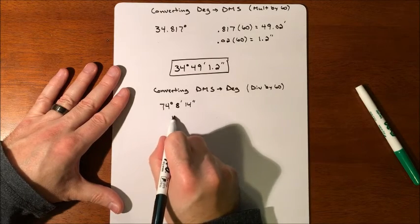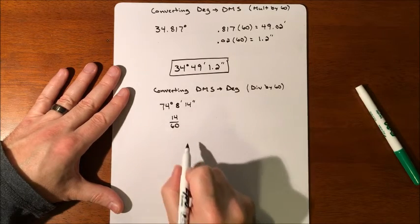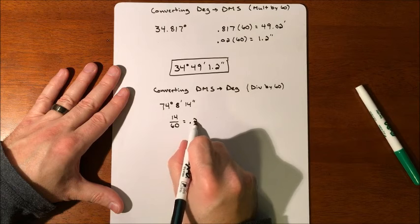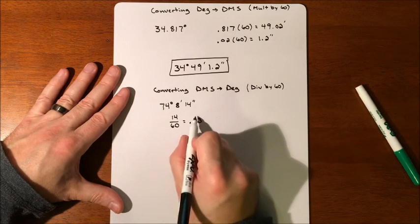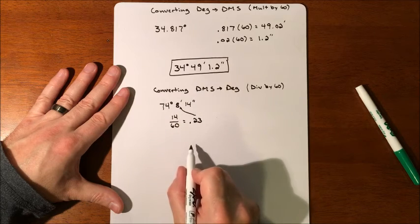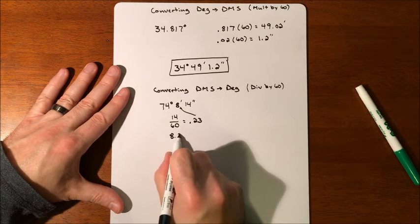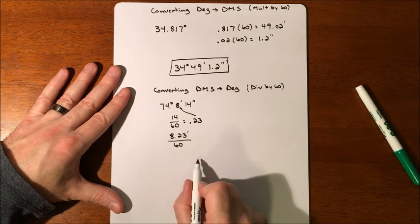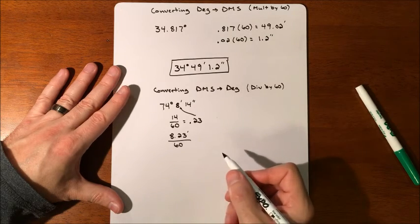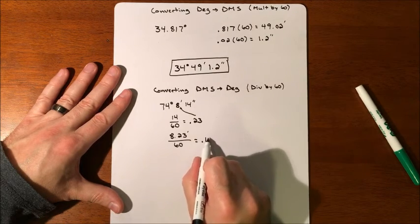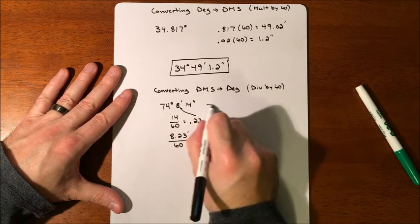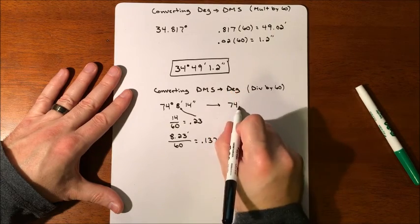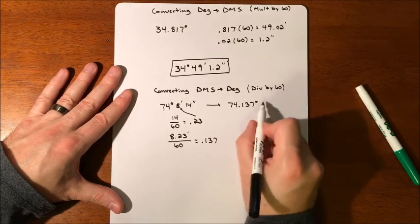So 14 seconds is 14/60ths of a minute. Well, that becomes .23. So what we're doing is we're tacking that on to the 8 minutes. So you're sitting with 8.23 minutes, which divide by 60 again, that's going to be making a fraction of an hour, a fraction of a degree. So that divides to .137. So then your total, your final is 74 degrees, 74.137 degrees.